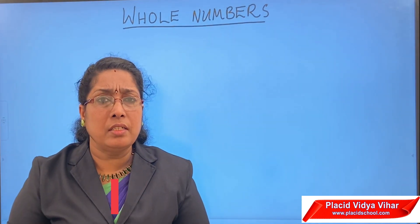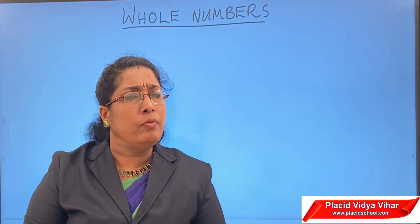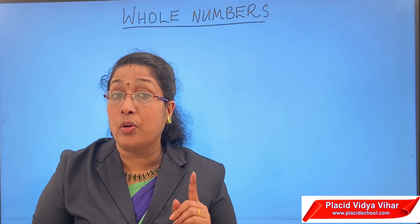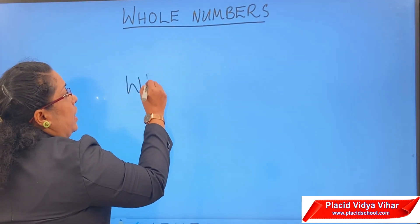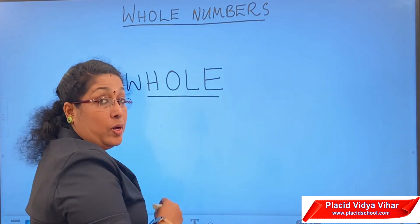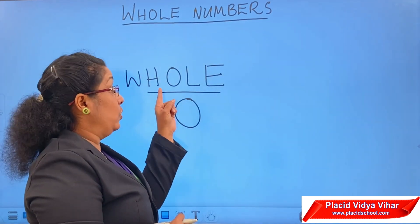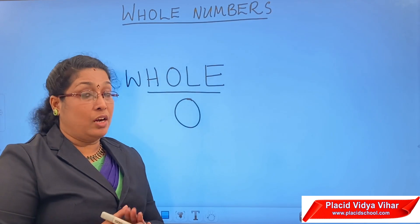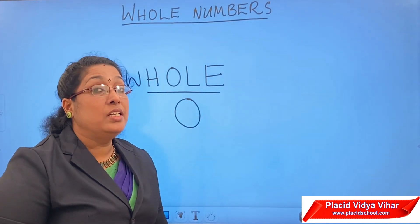Now let us look at whole numbers. The numbers that we start counting from 0 onwards are called whole numbers. Remember that 0 is also included in whole numbers. Look at the spelling of whole: W-H-O-L-E. In this, H-O-L-E means 'hole', which means round. Round means 0. So we can easily remember that 0 is also included in whole numbers. In natural numbers, 0 is not there, but in whole numbers, 0 is included.